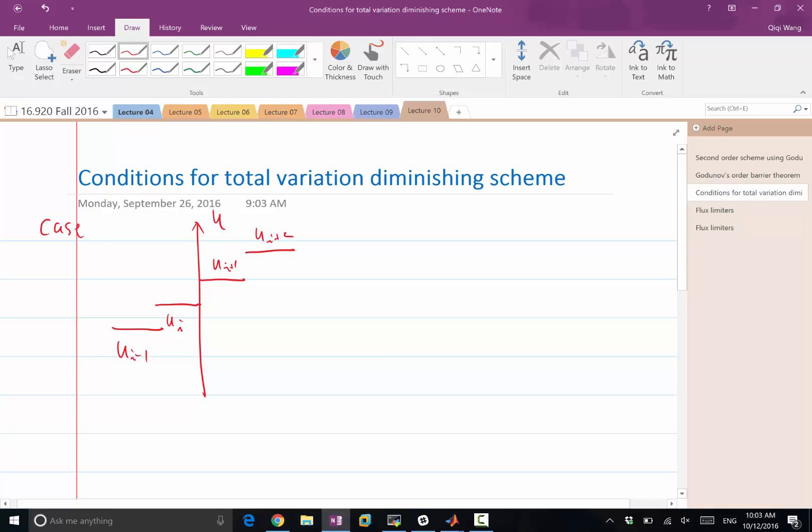So in this case, this special case 1 is ui minus ui minus 1 is equal to ui plus 1 minus ui is equal to ui plus 2 minus ui plus 1. So this is a special case we are considering.